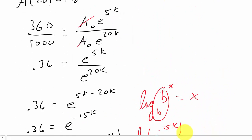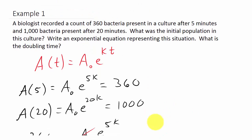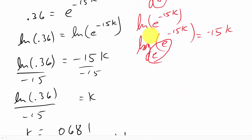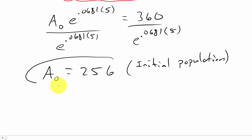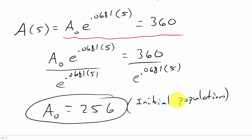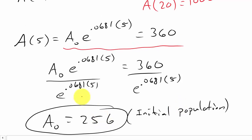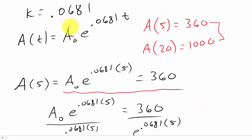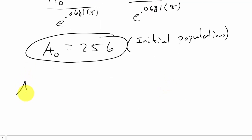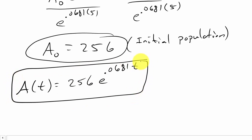The problem doesn't specify units beyond a count of bacteria. So now I can plug 256 in for a₀, and my full function is a(t) = 256·e^(0.0681t). That's my equation — it answers part two as well.